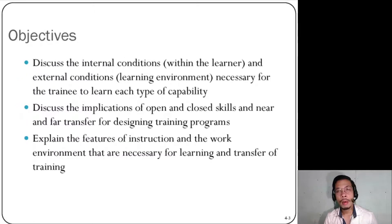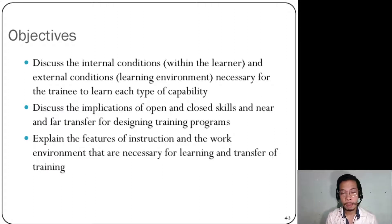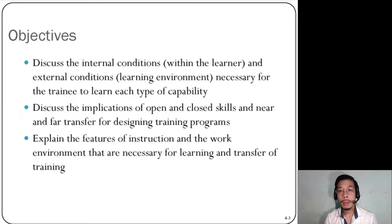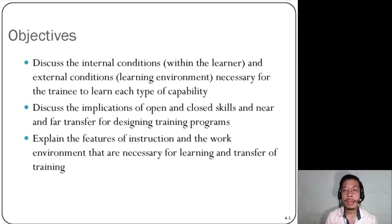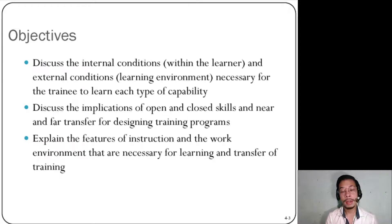As learners, at the end of this series, you'll be discussing the internal and external conditions necessary for training to develop each type of capability. You'll also be able to discuss the implications of open and closed skills and near and far transfer for designing training programs. Additionally, you should be able to explain the features of instruction and the work environment necessary for learning and transfer of training, because the environment where trainees undergo training definitely impacts the overall effectiveness of that training.